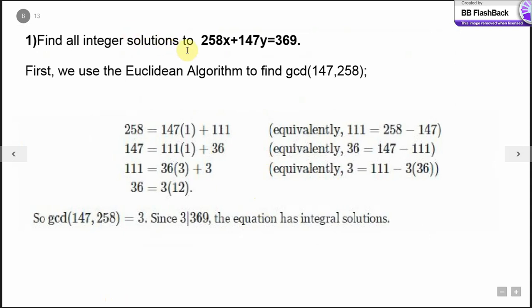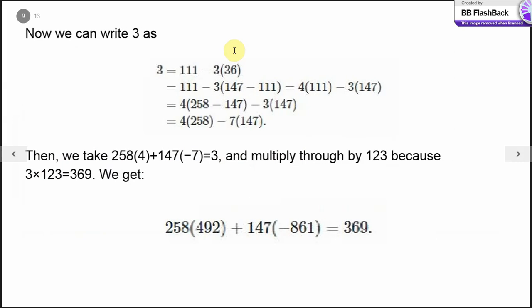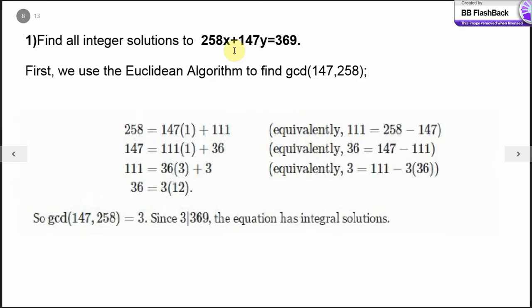Find all the integer solutions to 258x plus 147y equals 369. This is slightly the same method more or less, but little easier to understand. You could use it to check your solution in the end. First we have the Euclidean algorithm. If we use the Euclidean algorithm, find the gcd of 147 and 258, which, as you can see from these steps, comes out to be 3. 3 divides 369 and hence the equation has integral solutions.